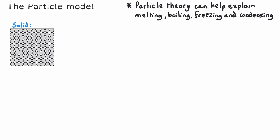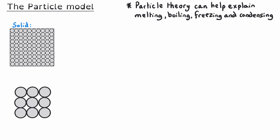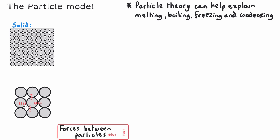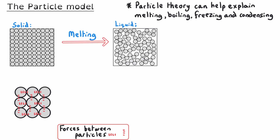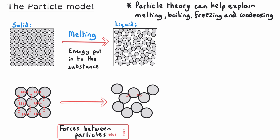Particle theory can be used to help explain changes of state. The particles in a solid are held together in ordered rows and a regular pattern, and they are not free to move around — only to vibrate about a fixed position — because there are strong forces between the particles. To turn a substance from a solid into a liquid, these forces need to be overcome or at least weakened, so energy needs to be put in, and this energy is only supplied once a substance reaches its melting point. Once turned into a liquid, there are still forces between those particles but they are weaker, which is why the particle arrangement for a liquid is much more disordered and random.